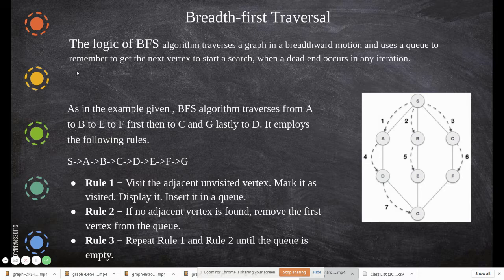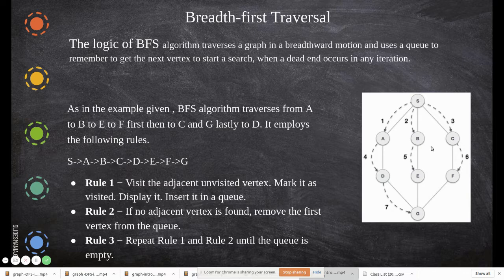It uses a queue in order to do that — a queue to remember the vertex to start a search when it didn't occur. So first it will visit and print, then b and then c, and then coming back d, e, f, and finally g. In order to do that traversal, we use queues.